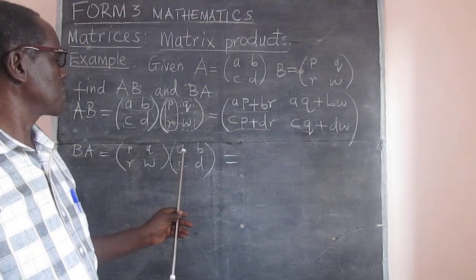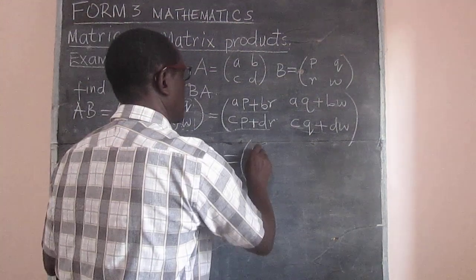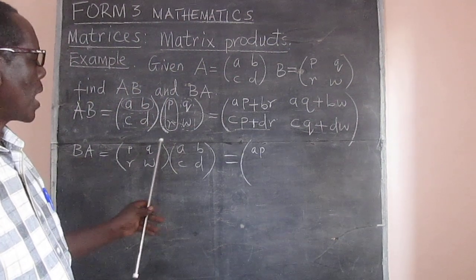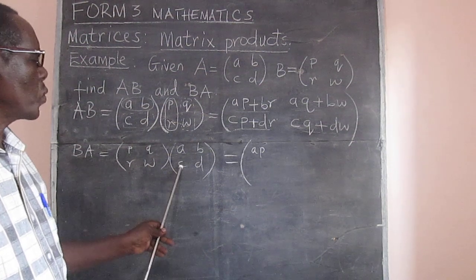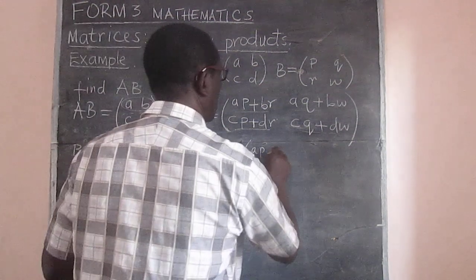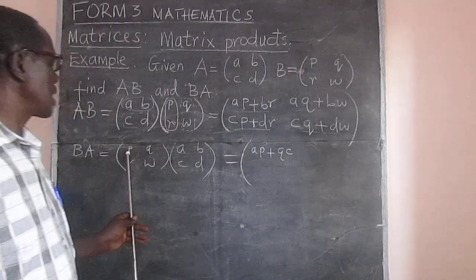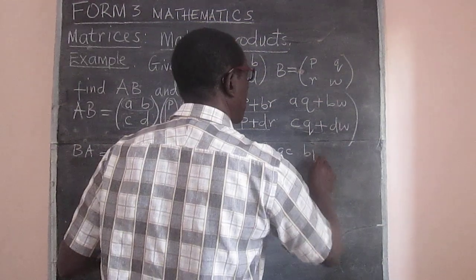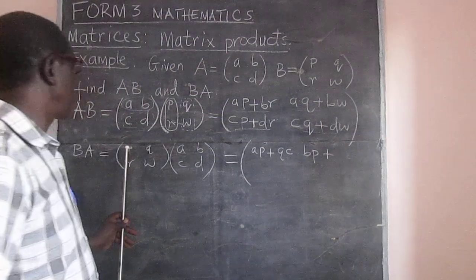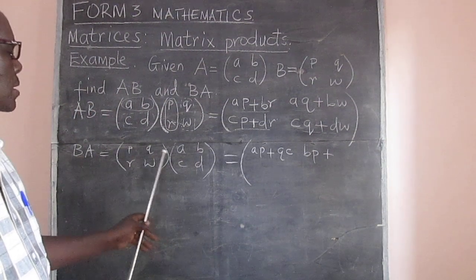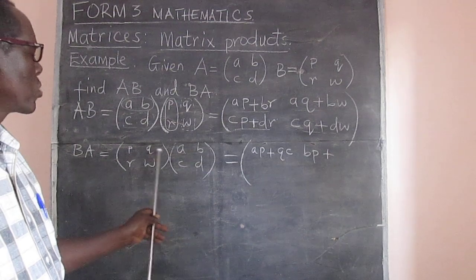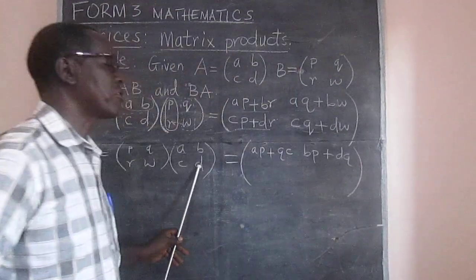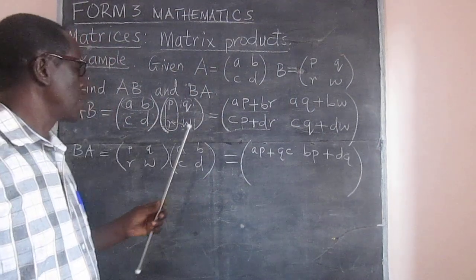So that we have P times A, that gives us AP, plus, see the difference now, this becomes QC. Plus QC. And now we take the first row multiplied by the second column, and that gives us P times B, and that's BP, plus, so P times B, that's BP, plus Q times D, which gives us DQ. I think you already noticed that what we are getting is different, but let's finish up.